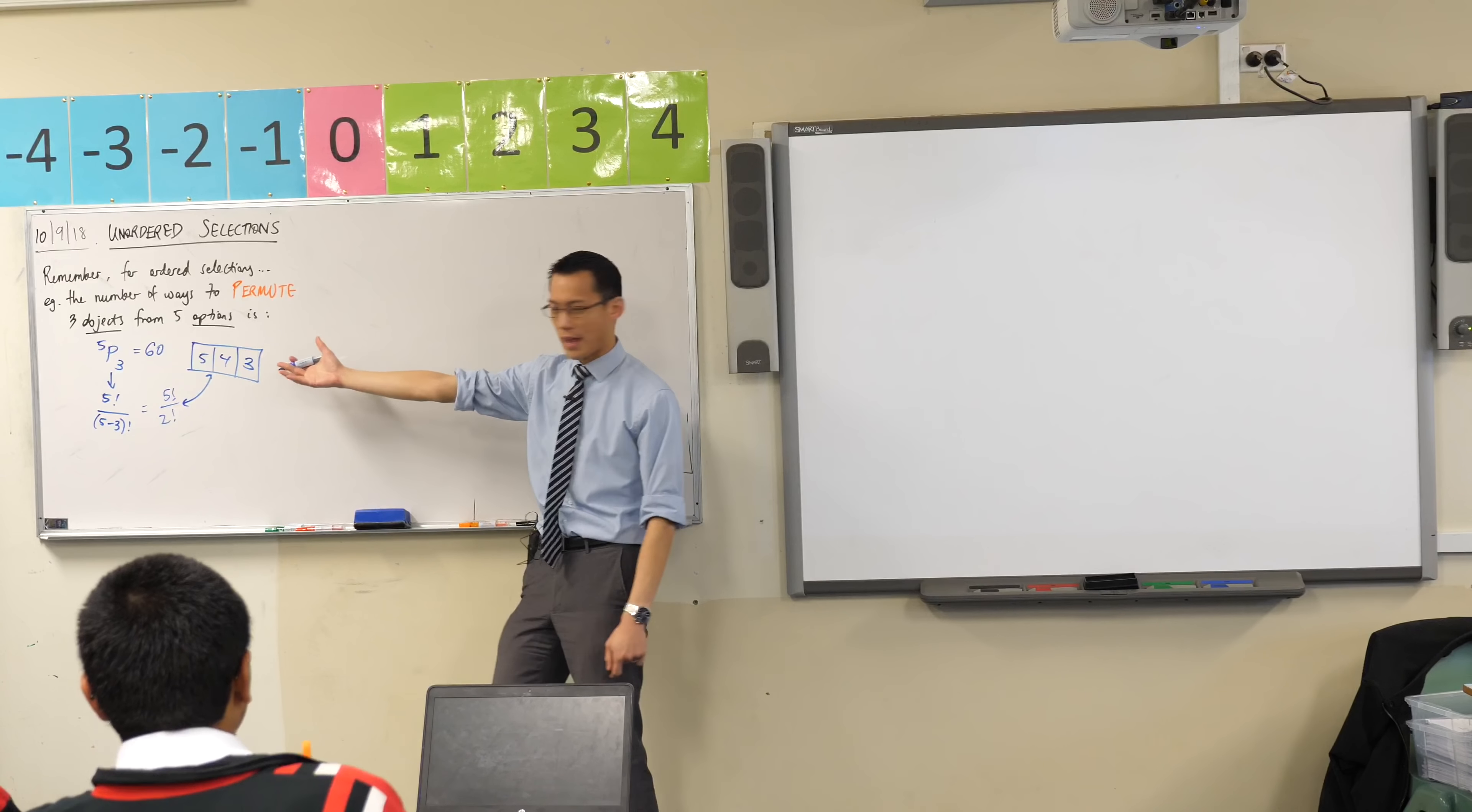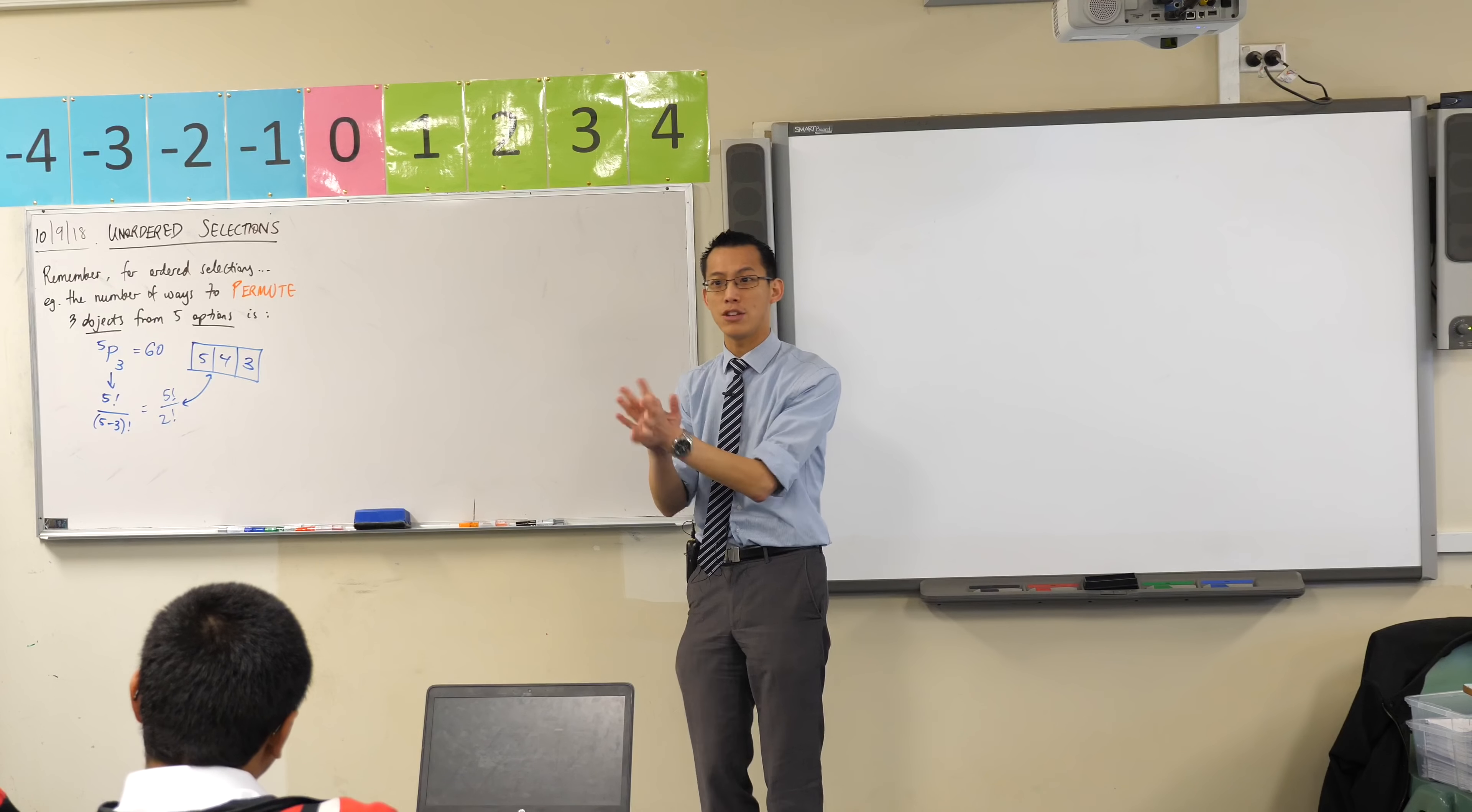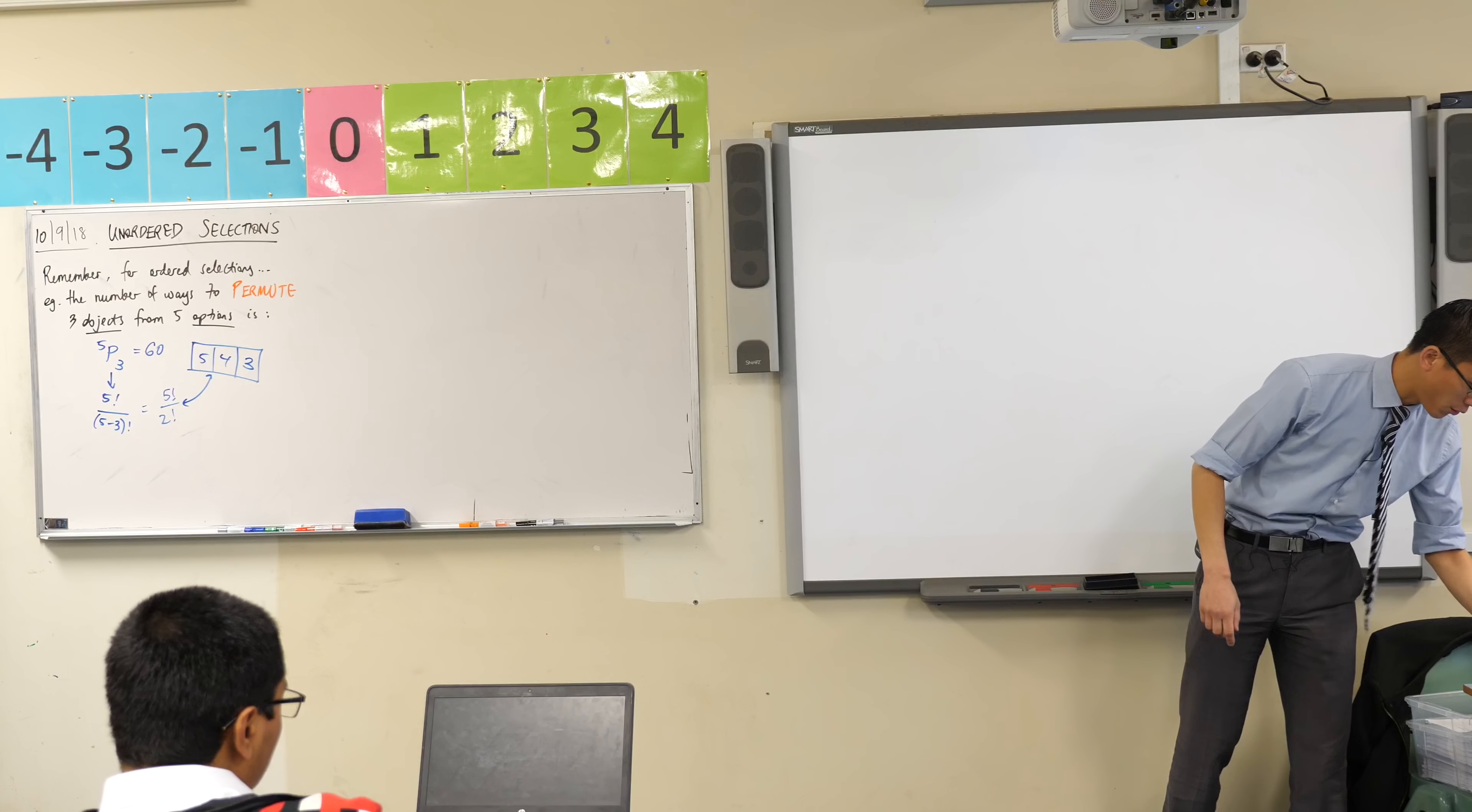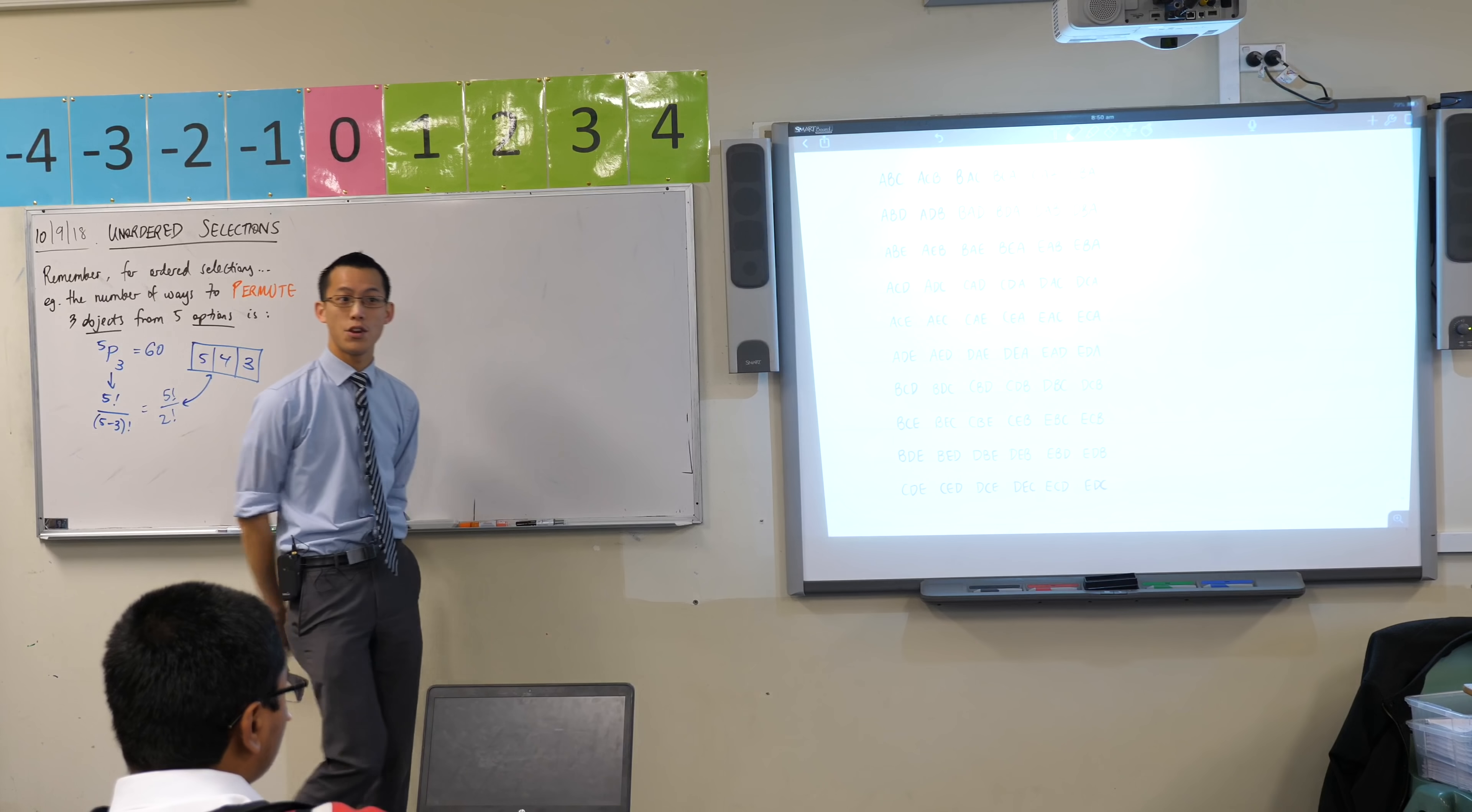I don't want to write all of this out because that would be a really time-consuming and slow way of doing things. When we talked about probability earlier on, we said you should list things out only as a matter of last resort or if it's a very simple question. But there's something I want to illustrate for you that you kind of need to see all the options in front of you in order to understand. So here are all 60 of the options.